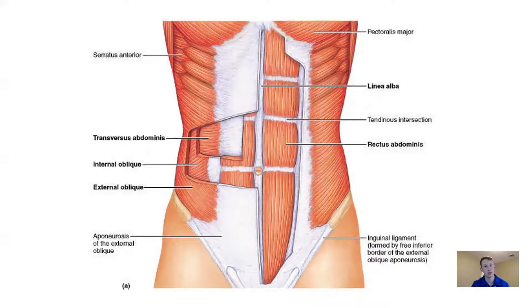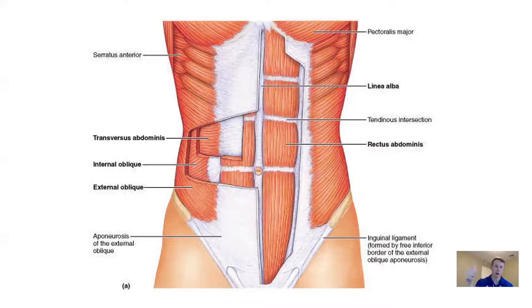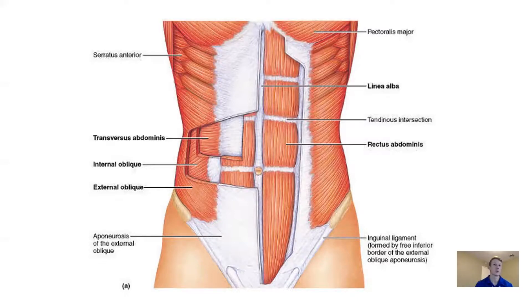Pause the video right now. Without going back through your notes, try to list out origins, insertions, and actions for each of those abdominal muscles we just covered: rectus abdominis, external oblique (opposite side), internal oblique (same side), and transverse abdominis. Go through each one, pause the video, see what you can remember without going back, and then go back and finish through your notes.